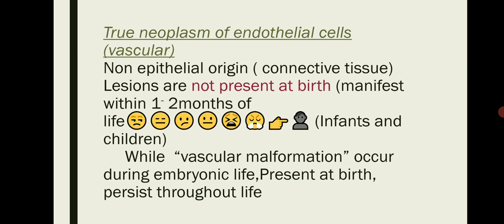Endothelial cells are found in vessels — the innermost layer of vessels is made up of endothelial cells. Hemangioma is a true neoplasm of endothelial cells. It is of non-epithelial origin, meaning it has not originated from epithelium; it is specifically from the connective tissue.